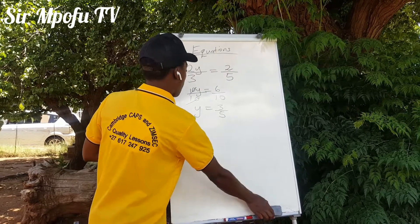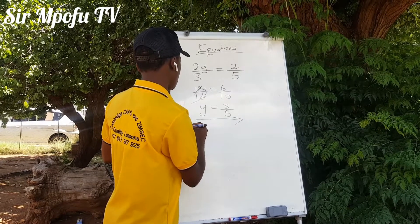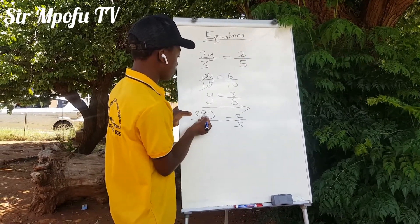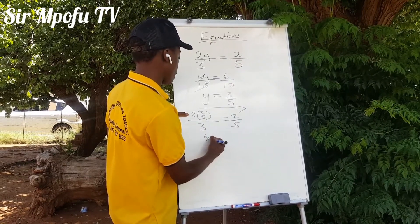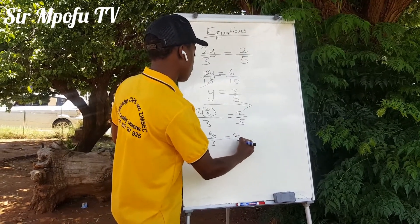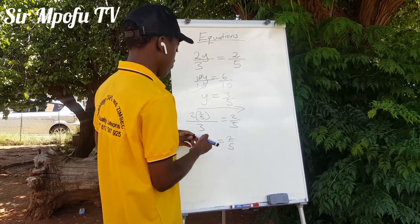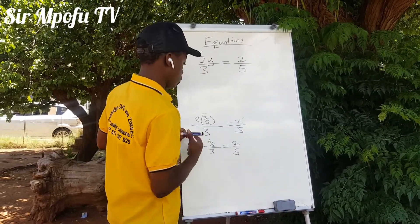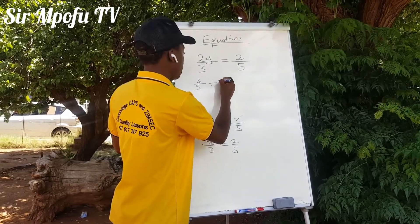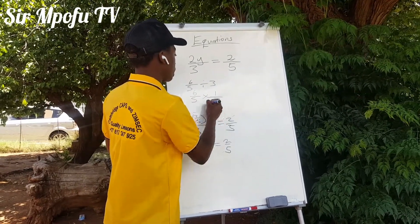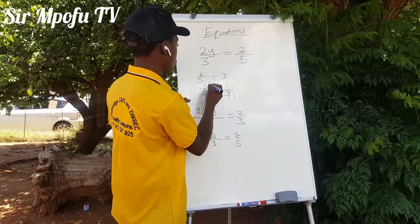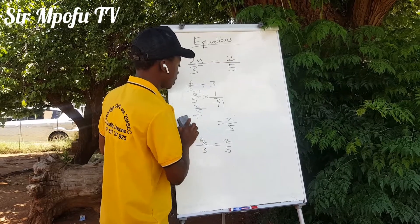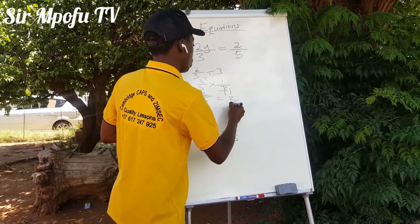We have to prove it. Substituting Y = 3/5: 2 times 3 over 5, over 3, equals 2 over 5. We simplify: 6 over 5 divided by 3 equals 6 over 5 times 1 over 3, giving 6 over 15, which simplifies to 2 over 5. So 2 over 5 equals 2 over 5. Proof complete.